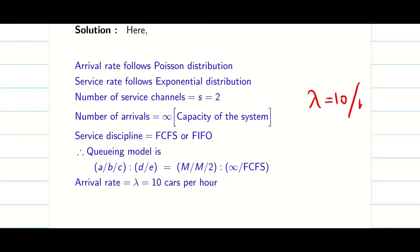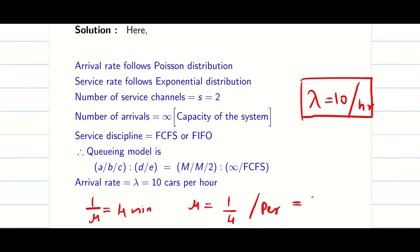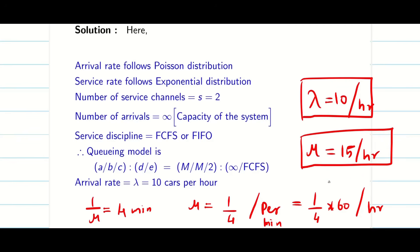The arrival rate is directly given as λ = 10 per hour. The service time is 1/μ = 4 minutes, so μ = 1/4 per minute. Since λ is in hours, we convert: μ = (1/4) × 60 = 15 per hour. So λ = 10 per hour, μ = 15 per hour, and s = 2.